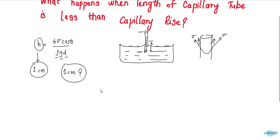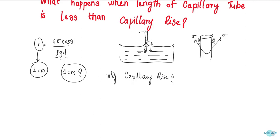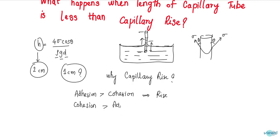If you face this question, you first need to analyze why capillary rise occurs. Capillary rise or capillary depression occurs because if adhesion is more than cohesion, then capillary rise occurs. That means the liquid moves to a height greater than the liquid surface in the container. If cohesion is greater than adhesion, then depression occurs.